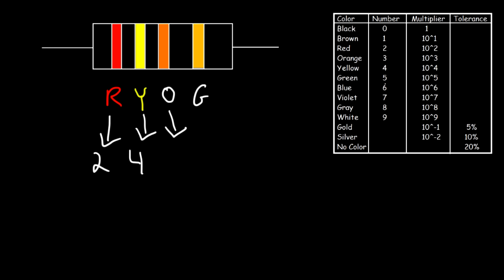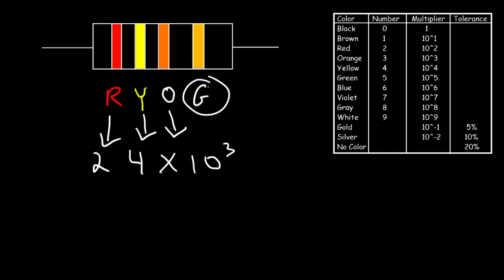But the third number is the multiplier. The first two colors correspond to the first two digits. The third color corresponds to the multiplier — orange is three, which is ten to the third. So this is twenty-four times ten to the third. And the last color is the tolerance, which is gold, so the tolerance is five percent.